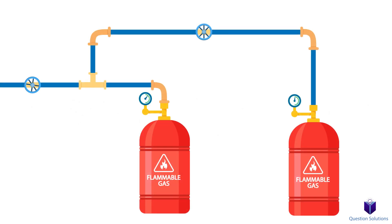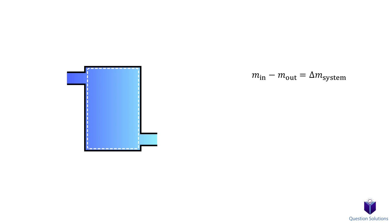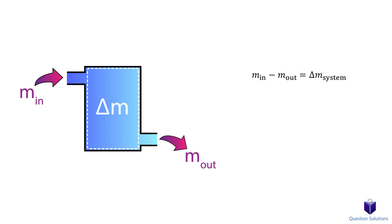An example would be filling up an empty container from a supply line. The mass balance for any system can be expressed like this: the amount of mass in minus the amount of mass leaving the system gives us the change in mass of the system.